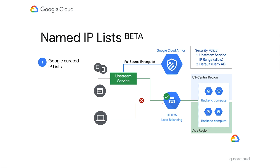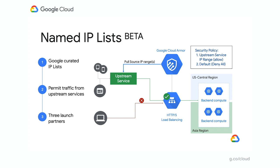We are proud to announce the availability as a beta of a highly requested capability to allow or deny traffic through a Cloud Armor security policy based on a pre-configured named IP list. Many of our customers receive traffic into their GCP projects from upstream service providers such as other CDNs. Prior to this capability, customers would have to self-manage the list of IPs from upstream providers. Now customers can configure a security policy to deny all traffic from the internet by default and allow only traffic from desired IP ranges by referencing the named IP lists. We are launching the beta with three launch partners — Fastly, Cloudflare, and Imperva — but intend to add other service providers over time.